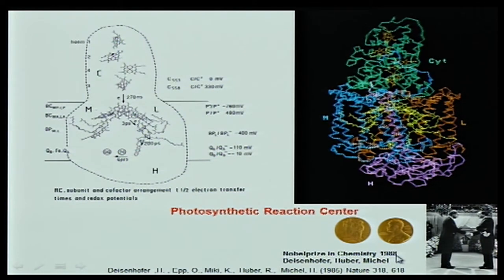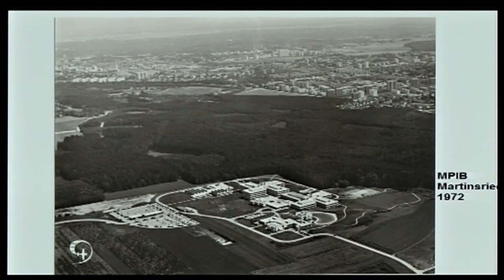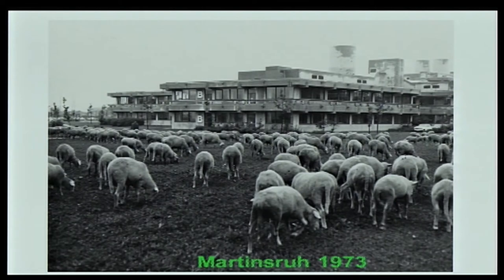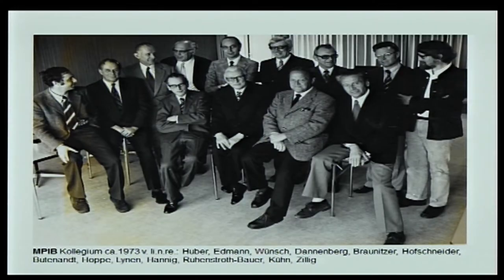This was at the ceremony in 1988 — both the king and I were substantially younger at that time. Back to my institute, which was inaugurated in 1972 in the Munich area — an institute in the forest, as you can see, on the outskirts of Munich with farmland and forest around it. This is how it looked when we moved in, with a flock of sheep grazing there. The institute is located in Martinsried, called Martins Ruh — meaning 'a quiet place for Martin' — though you can see it was not really quiet inside.